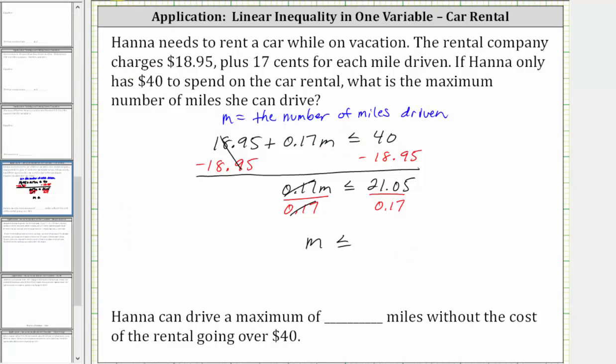And therefore m, the number of miles driven, must be less than or equal to 123. And therefore Hannah can drive a maximum of 123 miles without the cost of the rental going over $40. I hope you found this helpful.